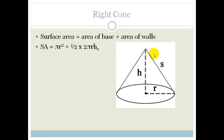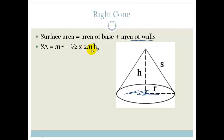The right cone is a bit tricky — I would say learn this formula because it's not given on the formula sheet. The base is a circle: πr². The curved wall area is ½ × 2πr × slant height, which simplifies to πr·Hs. So the total surface area of a right cone is πr² + πr·Hs.